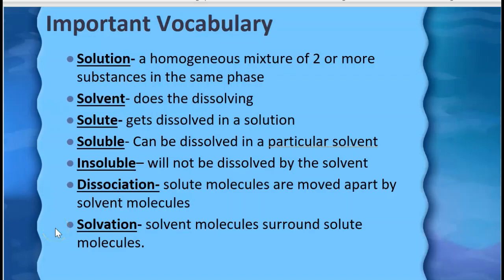In our unit on solutions we have a number of important vocabulary words. We need to make sure we're all using the same terms in the same way. A solution, going back to first semester, is a homogeneous mixture of two or more substances in the same phase. We're usually talking about a liquid solution, but in fact the atmosphere is a solution of gases because we can't see a difference between oxygens, nitrogens, or CO2s, and the gases move around constantly so they stay basically the same concentration at all points around the earth.